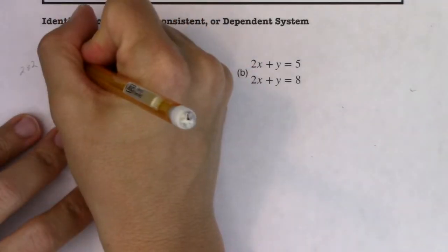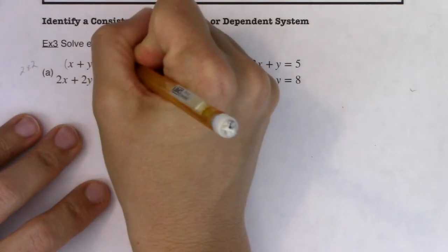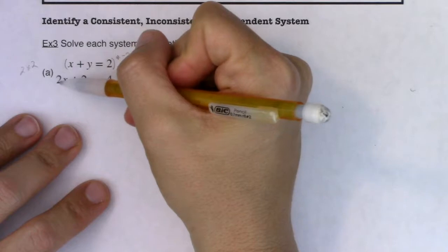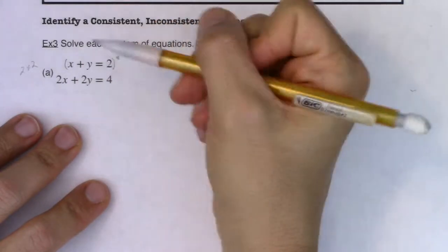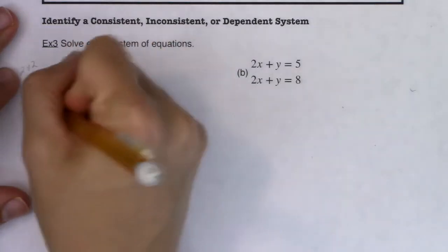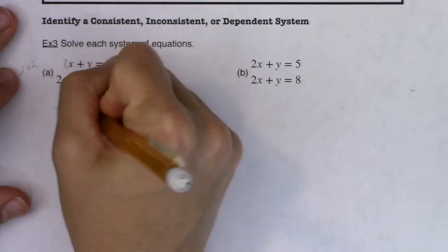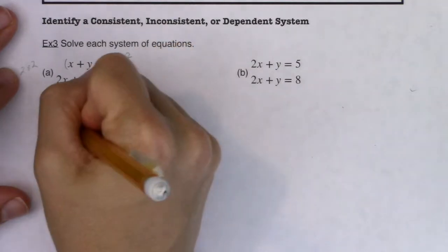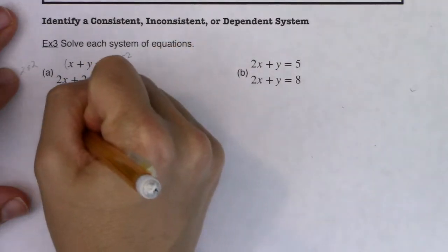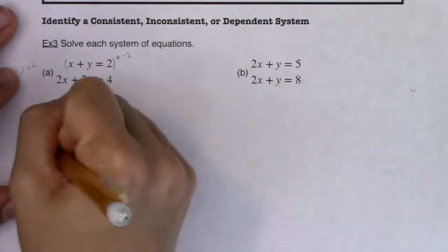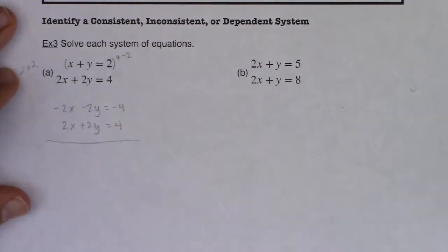Let me go ahead and multiply this by negative 2. I'm opting for negative 2 because I have positive 2 here, so I would like this coefficient to become negative 2 so those variables will eliminate. That means I will have negative 2x minus 2y is equal to negative 4, and here I will have 2x plus 2y is equal to positive 4. When I add those, all of a sudden everything eliminates.